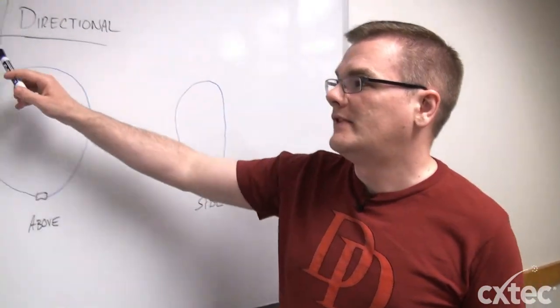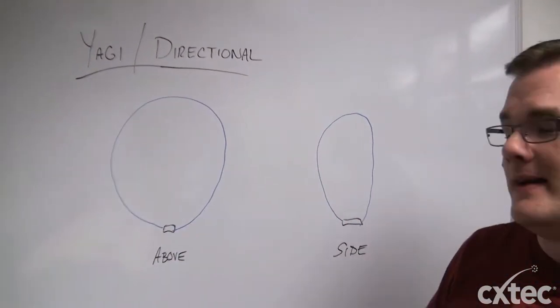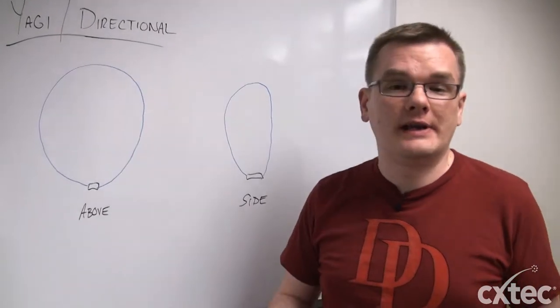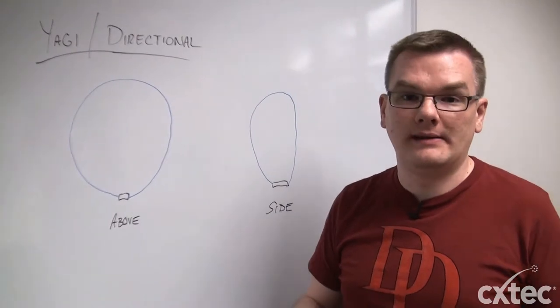Over here, we have the Yagi or directional antenna. This is very crude as well. And you'll see that as you start looking through antennas, if you start looking at radiating patterns for those antennas, that these shapes will vary greatly.